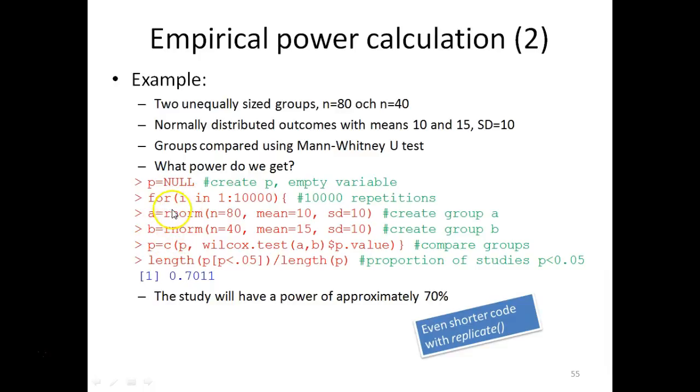So, this is what is to be done 10,000 times over and over again. We start by defining the first sample A according to your assumptions: a normally distributed sample, 80 observations, mean 10, and standard deviation of 10. And you calculate the group B, the second group.